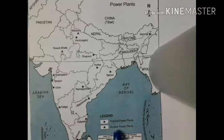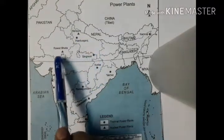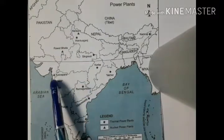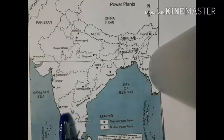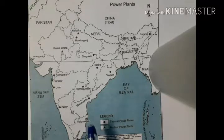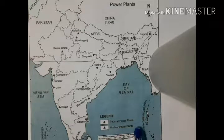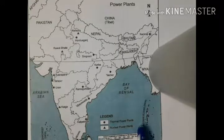Next is the Nuclear Power Plant. Nuclear power plants are located at Narora in Uttar Pradesh, Rawatbhata in Rajasthan, Kakrapar in Gujarat, Tarapur in Maharashtra, Kaiga in Karnataka, and Kalpakkam in Tamil Nadu. Nuclear energy is obtained by altering the structure of atoms. Uranium and thorium are used for generating nuclear power, and the monazite sands of Kerala are rich in thorium.